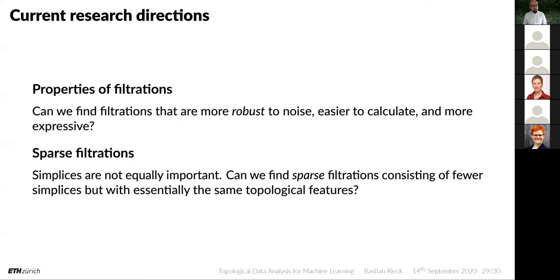So I want to give you two current research directions. First, properties of filtrations: are there filtrations that are more robust to noise, easier to calculate, more expressive? We'll see some examples in the next lecture. Second, can we find a sparse representation? Not all simplices are equally important and there might not be sufficient memory to represent all of them. Can we find sparse filtrations that have fewer simplices but essentially the same topological features? If we could, we could scale persistent homology to very big datasets at a fraction of the current cost.